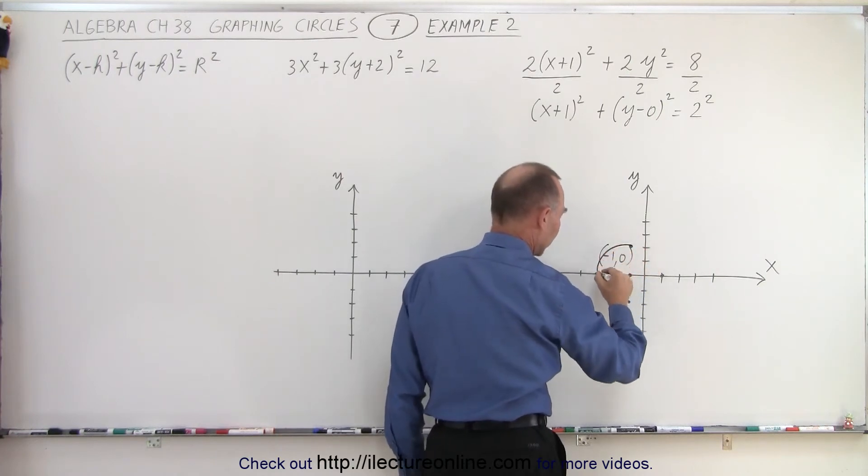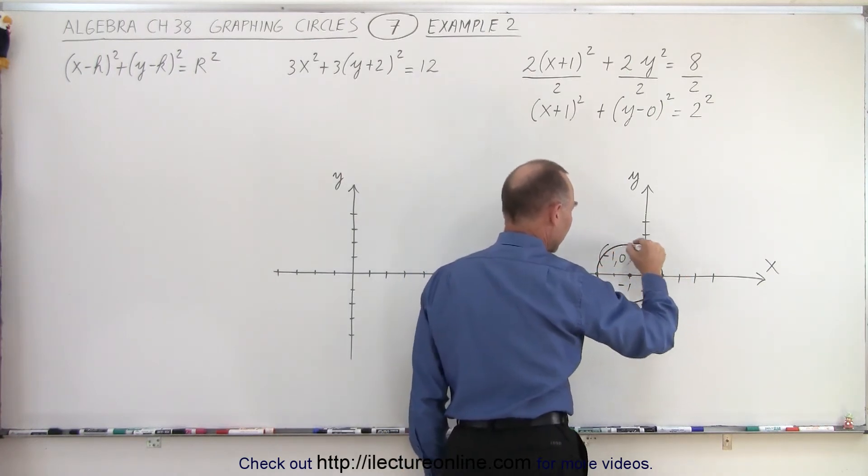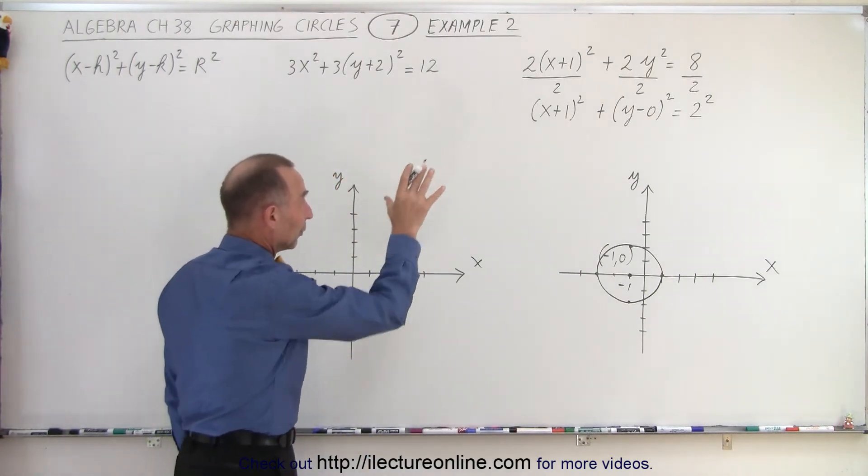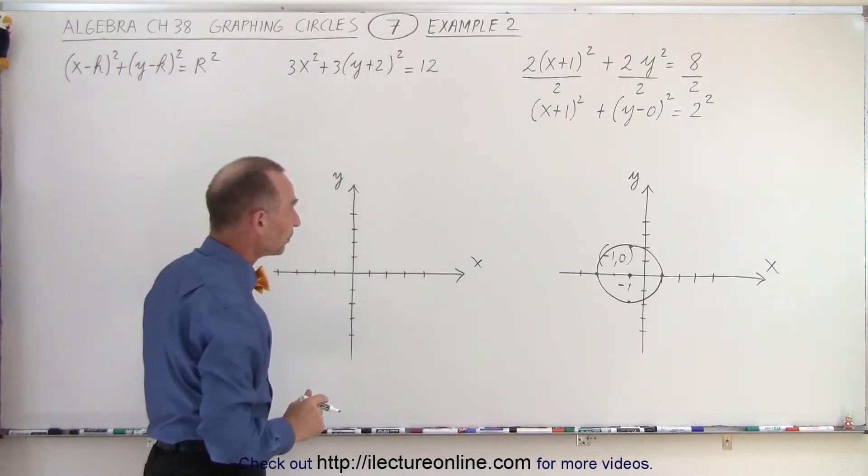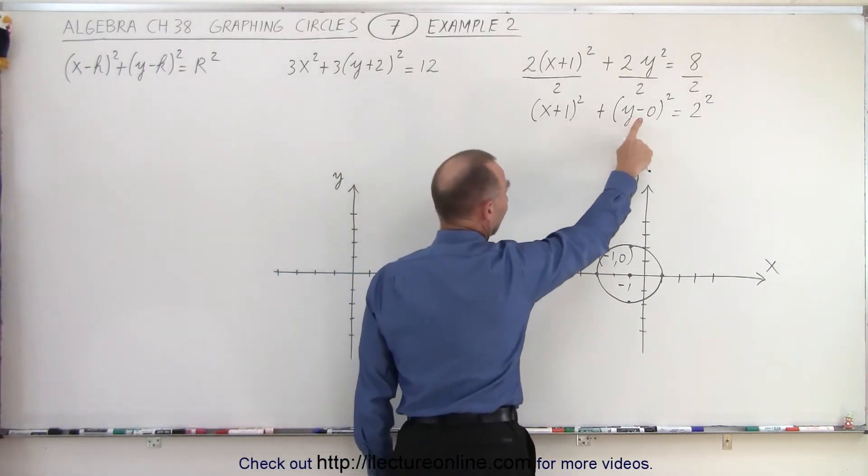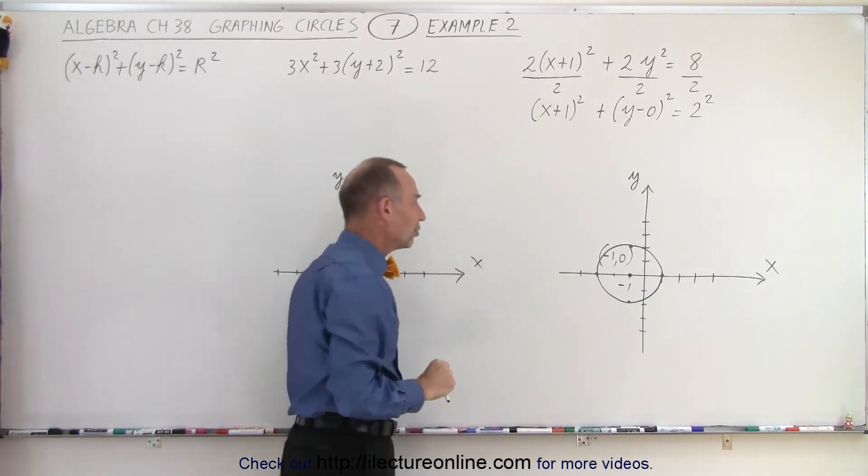We can then connect those dots like this, and now we have ourselves the circle, the graph of the circle relative to that equation. Again you can see the center is shifted to the left by 1 and 0 in the y direction.